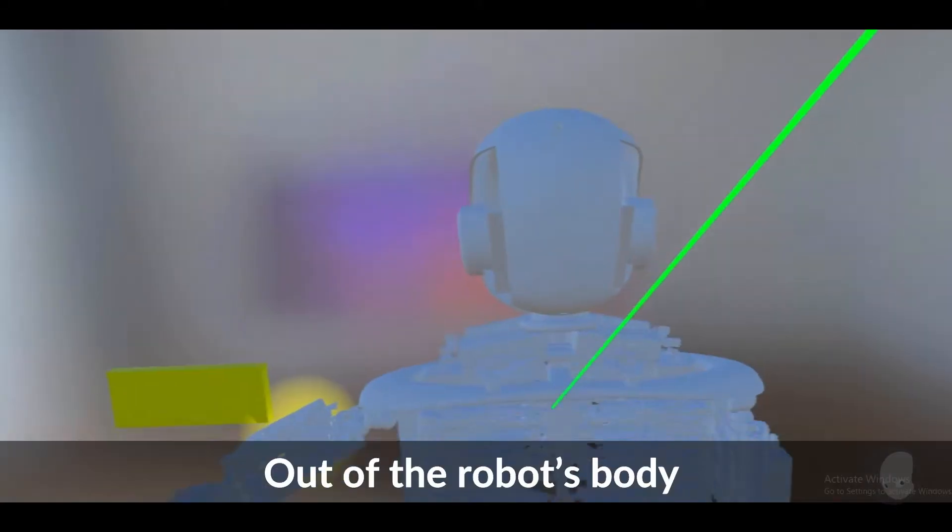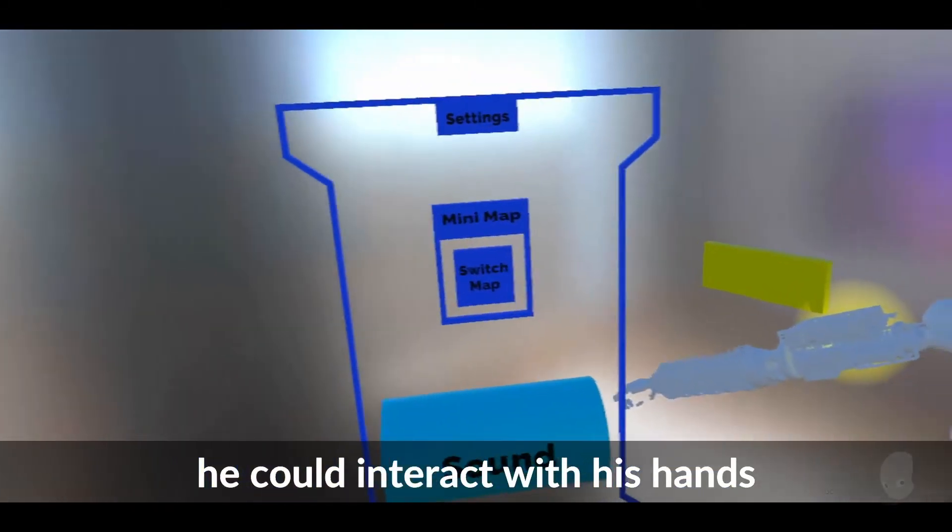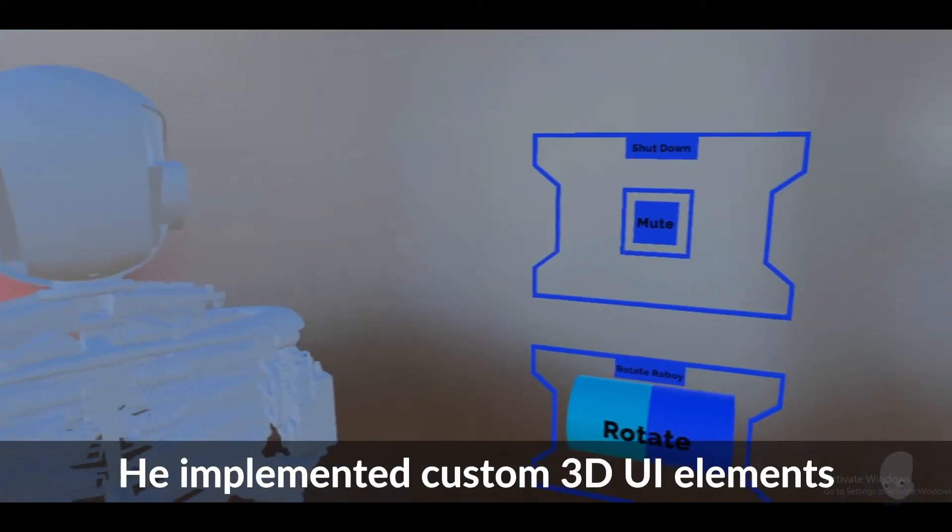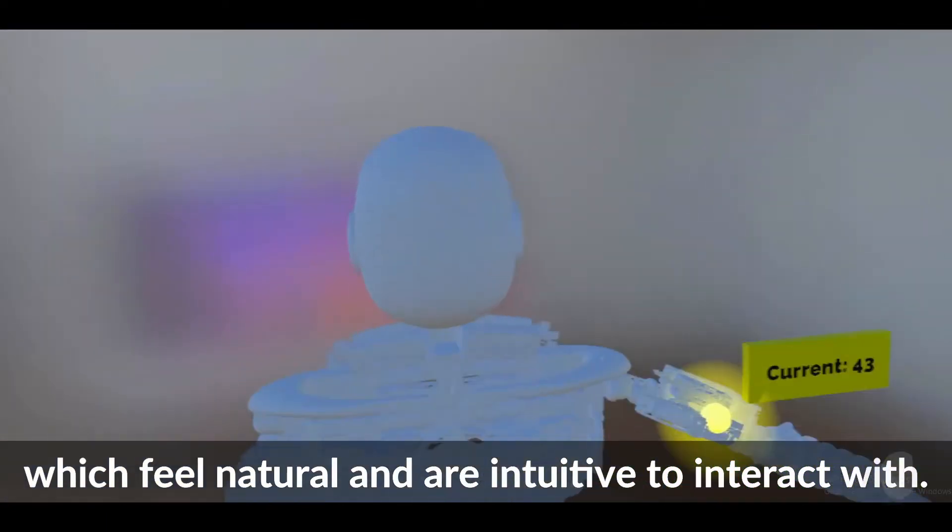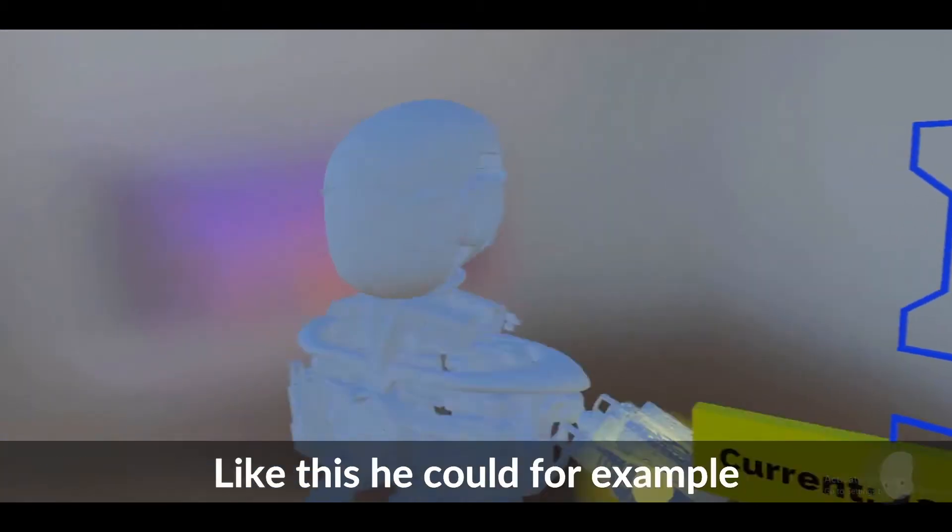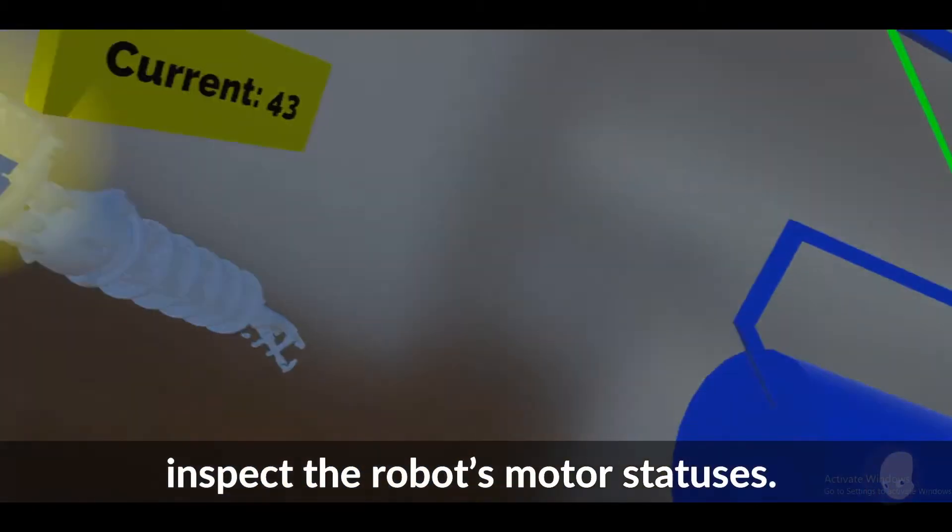Where was I? Right. Out of the robot's body he could interact with his hands and use a fancy menu. He implemented custom 3-dimensional UI elements which feel natural and are intuitive to interact with. Like this he could for example inspect the robot's mobile statuses.